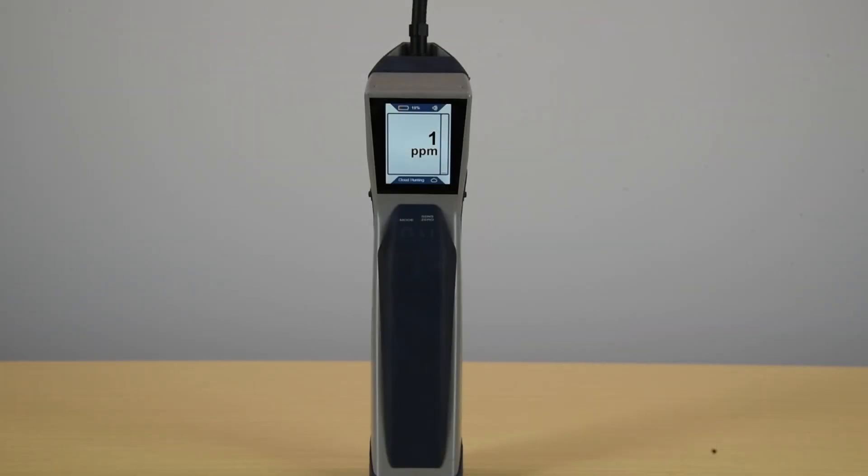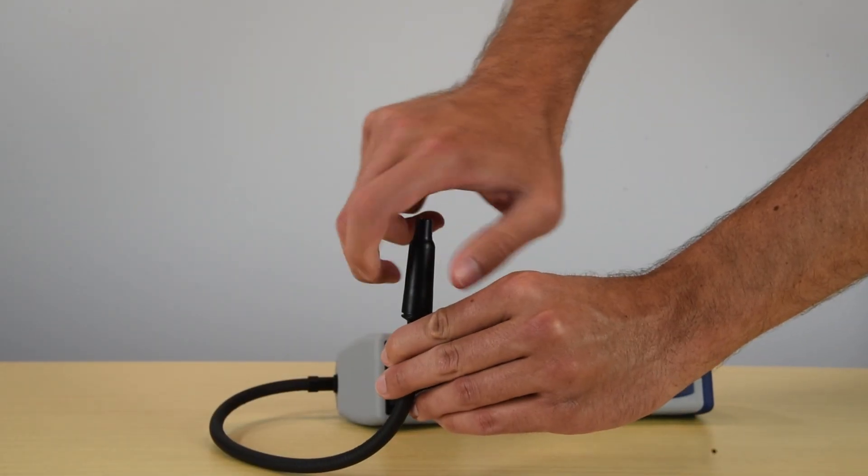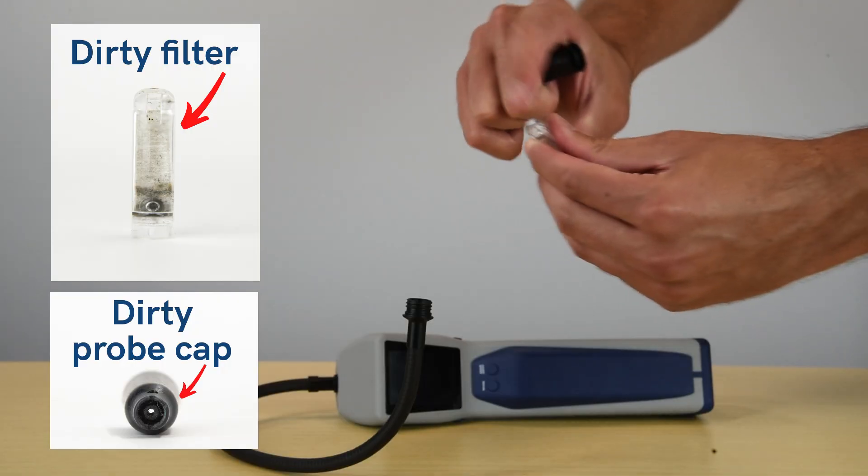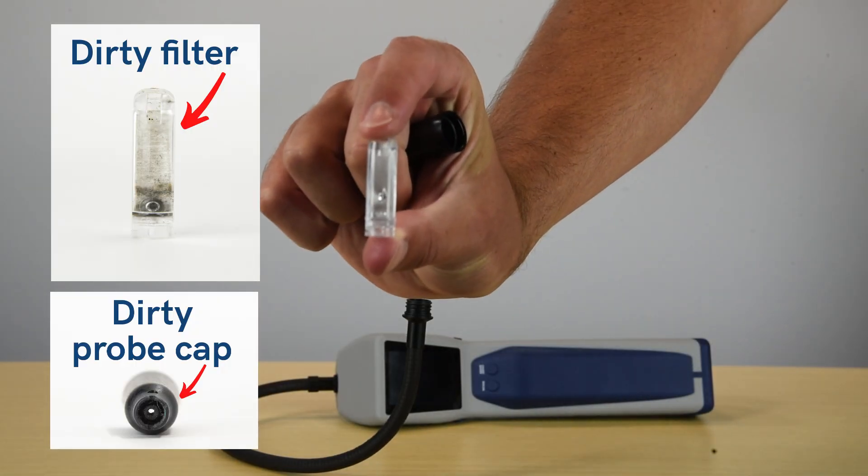If your DTEK Stratus is showing a PPM reading in clean air or not detecting refrigerant, there are a few things to check that may be causing the false alarm. First, inspect the probe cap and filter to make sure both are clean. If either are dirty, replace that component.